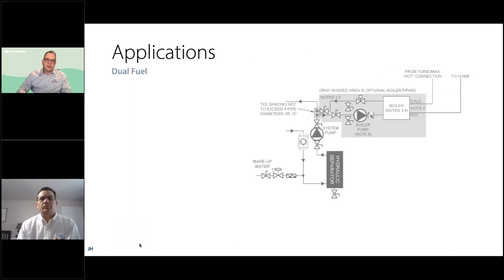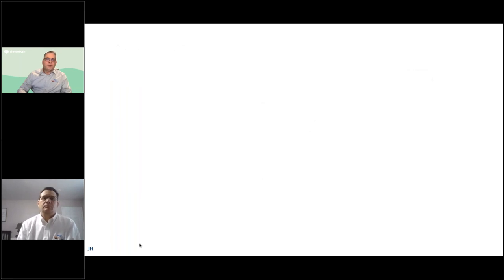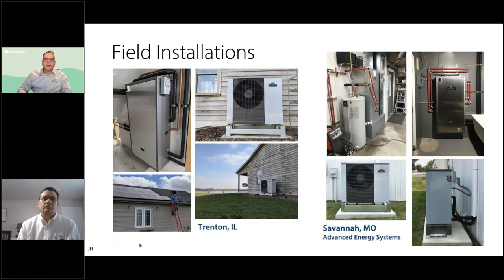This is the dual fuel setup shown in the manual — closely spaced tees connected to a boiler backup. In this case we can add some heat to the hydronic side from the boiler when needed. This would be the dual fuel application.